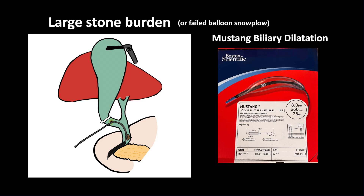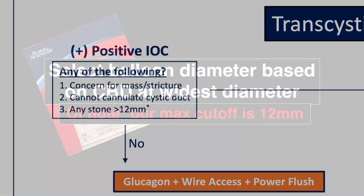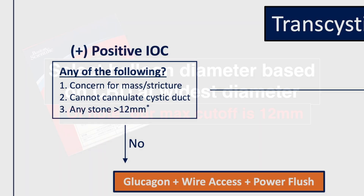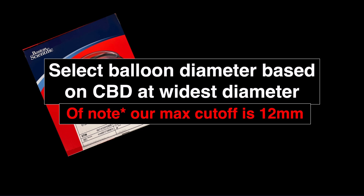Before starting a balloon sphincteroplasty, you must select the balloon diameter, which will be based on the largest width of the common bile duct as measured intraoperatively. Our cutoff is 12 mm, as that is our largest balloon, and as shown on our algorithm, any stone greater than 12 mm will get a post-op ERCP as we do not have lithotripsy. If the stone is much smaller than the common bile duct at its greatest diameter, you can also choose a smaller balloon to start with, but make sure it is at least 2 mm bigger than the largest stone.